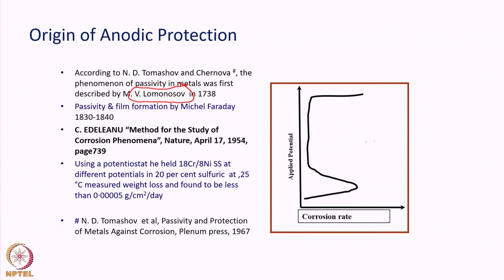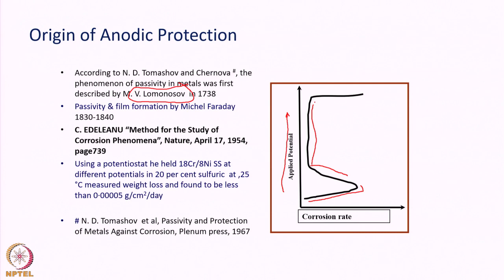Edilenu showed, using a potentiostat, that the alloy 304 stainless steel held at different potentials in sulfuric acid undergoes different rates of corrosion. The diagram on the left shows the variation of corrosion rate with applied potentials. In sulfuric acid, the corrosion rate increases as you increase the applied potential, reaches a maximum, then decreases and remains almost steady over a potential range. Beyond a critical potential, the corrosion rate increases again. This forms the basis for anodic protection, which became a technology in 1970.